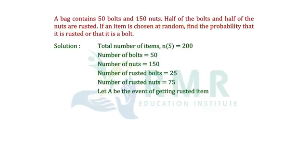Let A be the event of getting a rusted item. Then n(A) equals 75 plus 25 equals 100. P(A) equals n(A) by n(S), that is 100 by 200.